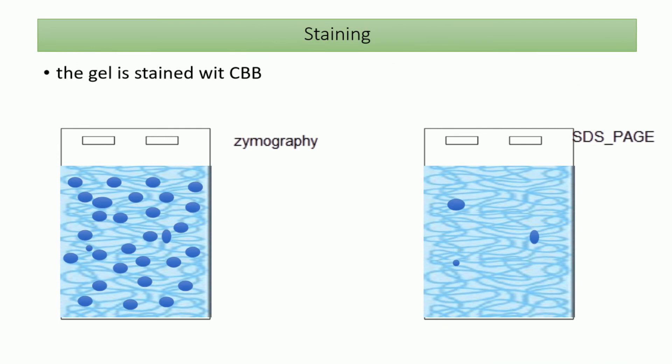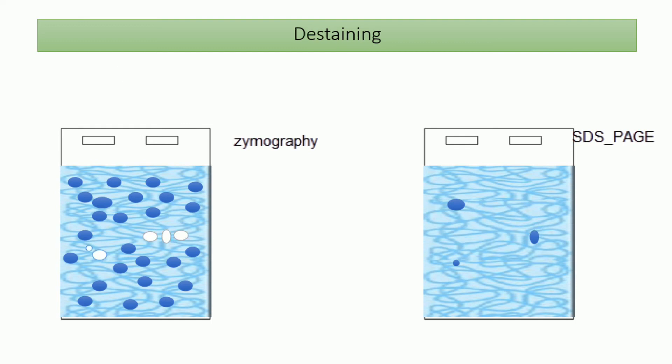After activation, we stain the gel. We use Coomassie Brilliant Blue, the most common dye for staining gels. After staining, the gels in both SDS-PAGE and zymography will appear uniformly blue.